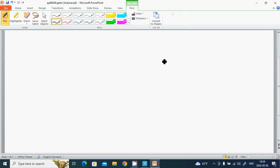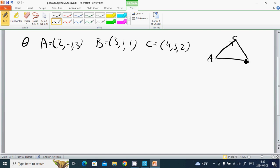Another example: we will calculate the angle θ. A equals (2, -1, 3), B equals (3, 1, 1), and C equals (4, 3, 2). We want to find angle θ at vertex A between AB and AC.